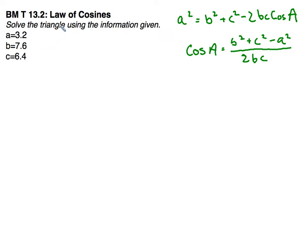Now when we are using the law of cosines we always want to start with the biggest side, 7.6. We want to start there because the biggest side is going to give us the biggest angle. And it could be obtuse, it could be acute, but we'll find that out when we actually solve it.